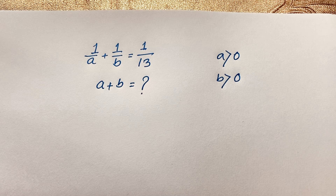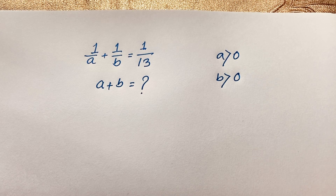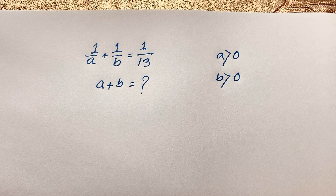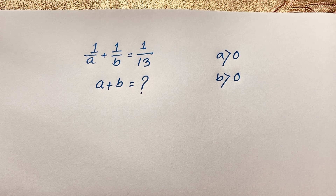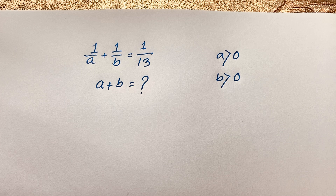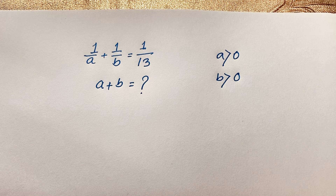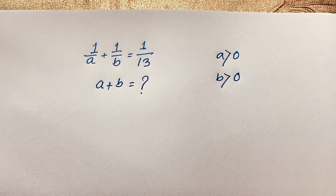Hello everyone. In this video we have solved a nice math problem. The question is: 1 over a plus 1 over v is equal to 1 over 13 — a plus v is equal to what? Here a and v are positive integers, with a greater than 0 and v greater than 0. We first find out a and v, then find a plus v.